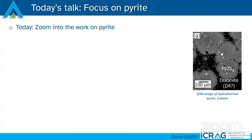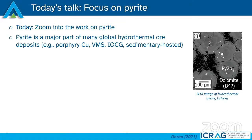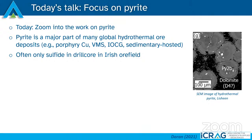I really wanted to zoom in on pyrite today. Many of you are probably wondering why — but pyrite is a major part of many global hydrothermal ore deposits, and within Ireland it is often the only sulfide found in drill core. Someone could drill a borehole that is absolutely barren apart from some pyrite, and then five meters away there could be beautiful massive zinc-lead mineralization. So how can we use pyrite to tell where we are in relation to mineralization?